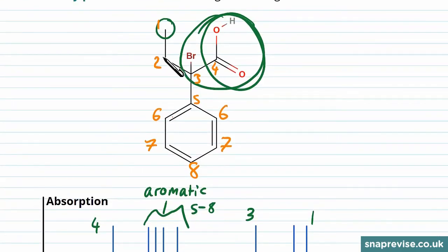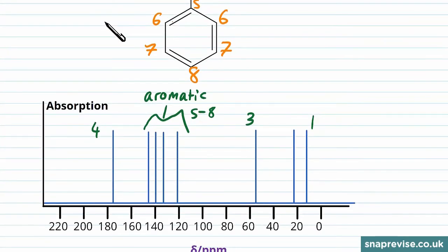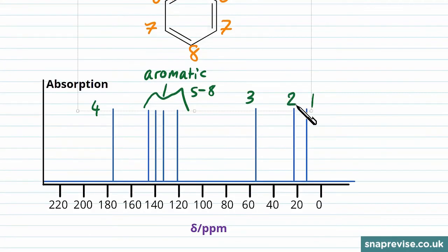This carbon is most similar to TMS, so we would expect it to be closest to zero. This carbon is closer to the carbon that's attached to bromine, and the effect of the bromine being closer is going to be to move the peak further away from zero. So this would correspond to carbon number two.